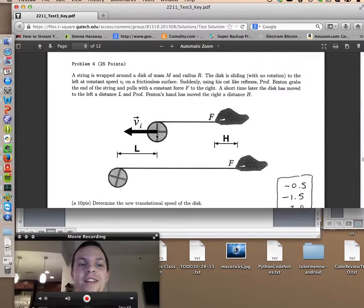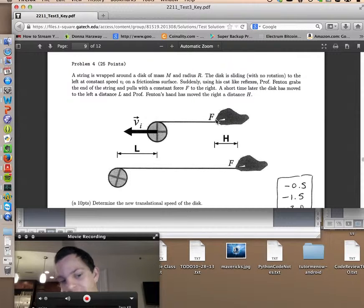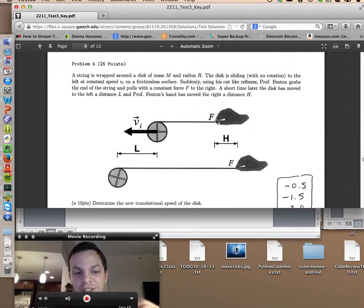there's the disk, and it is moving to the left, so in the negative x direction. It has displaced the distance l, and there is a hand which is exerting force on the string, which is Professor Fenton's hand. And it has exerted force f over a distance h.